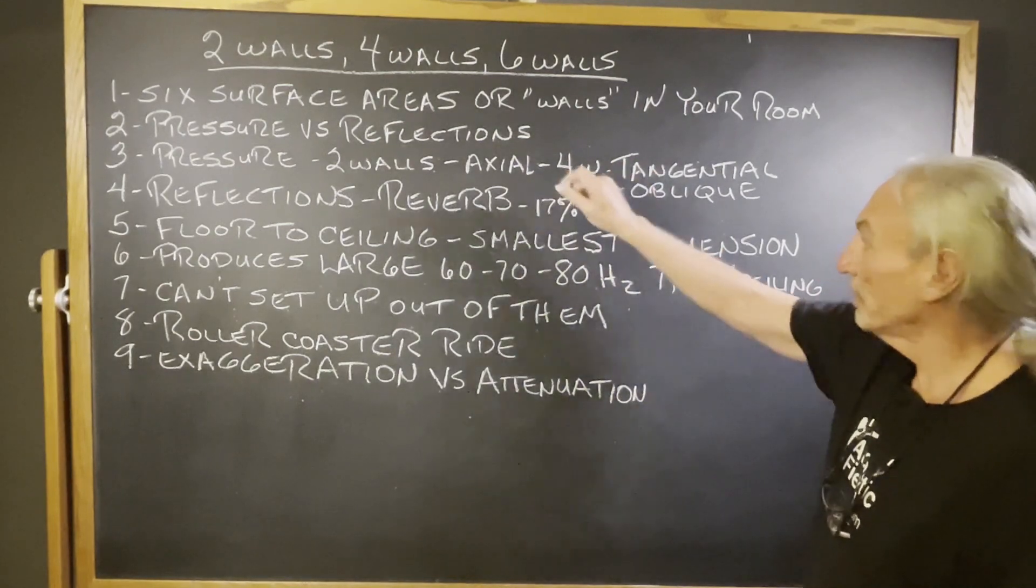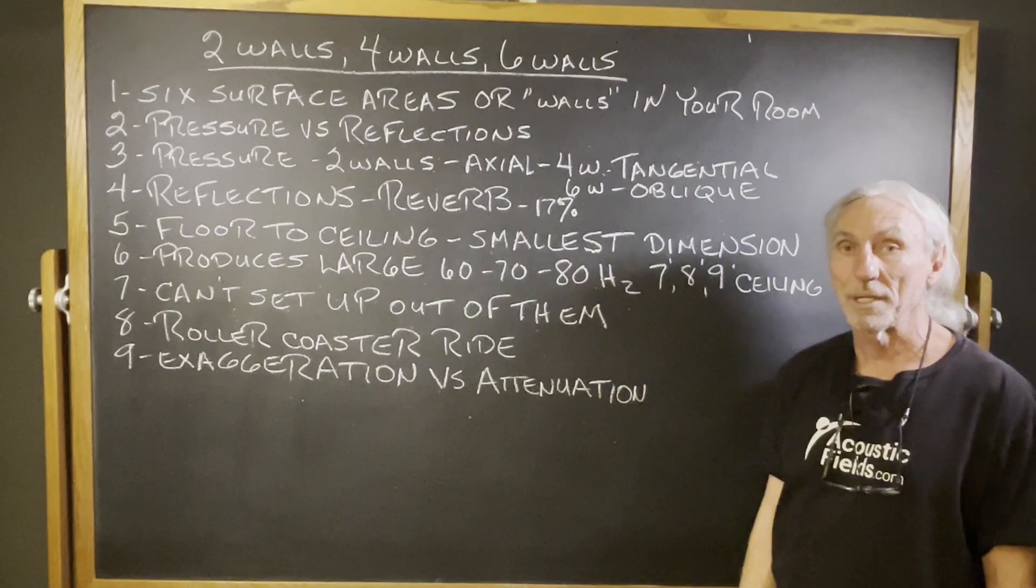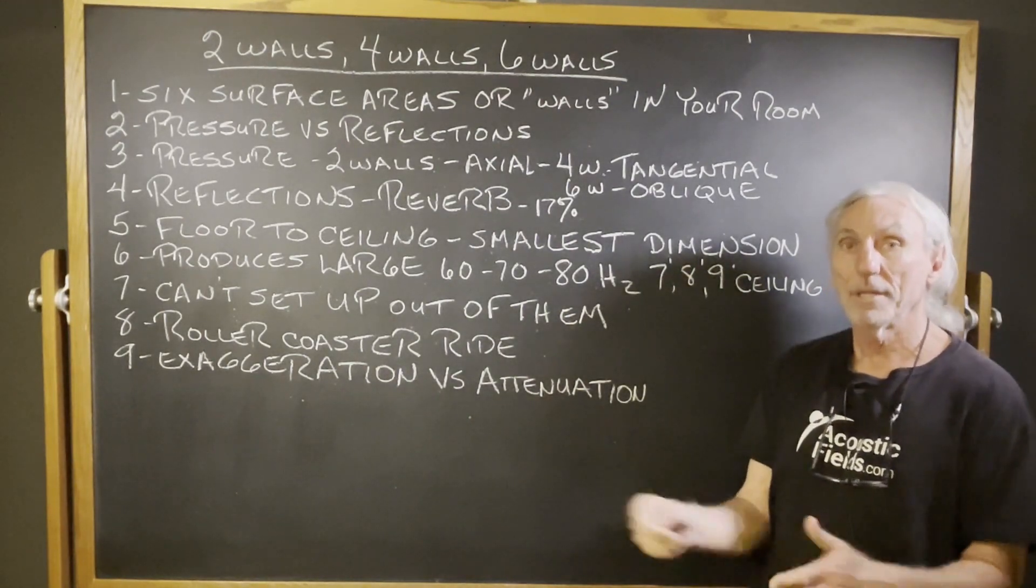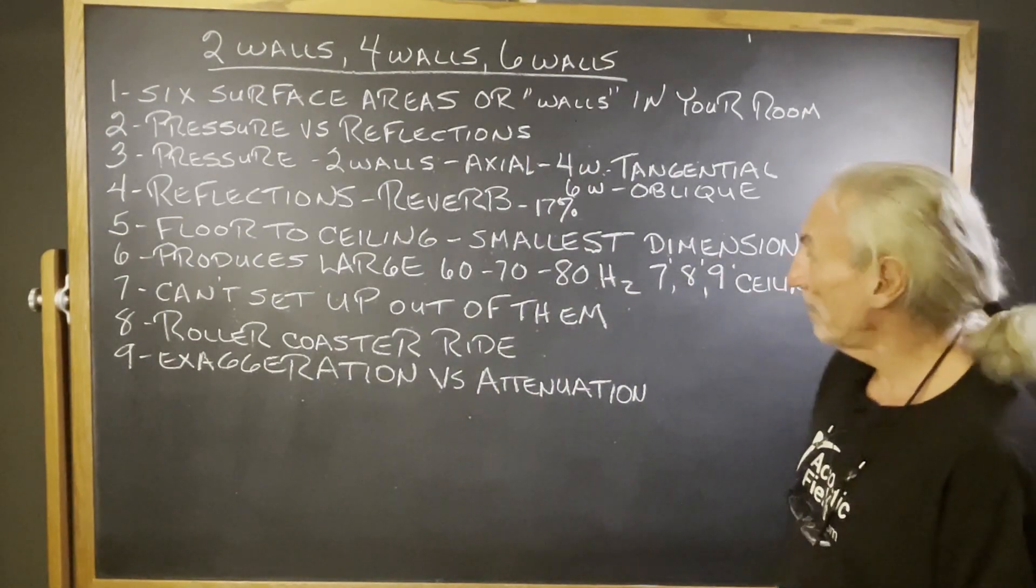Pressure, four walls, six walls, two walls, you know those words: axial, tangential, and oblique. They even have names for them. Two walls, parallel, axial. Four walls, tangential, and six, oblique. So it's powerful.